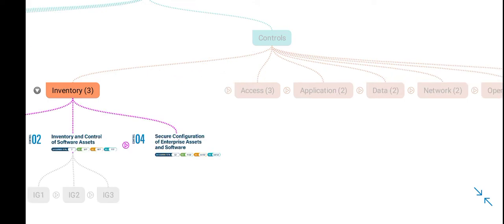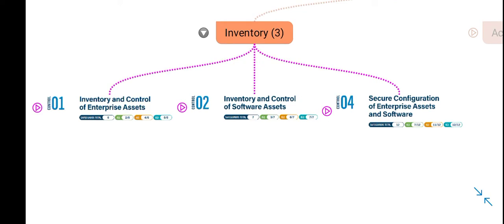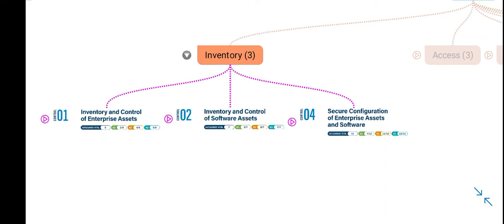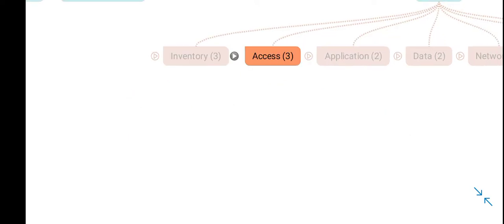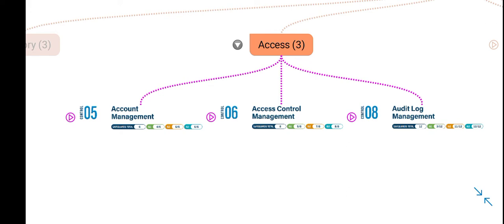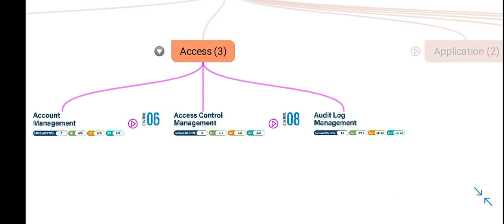With regards to inventory, there are 3 controls. The first control is inventory and control of enterprise assets, the second is inventory and control of software assets, and the third is secure configurations of these assets and software. I thought these could be classified under inventory control. And then in access control, there are 3 controls — account management, access control management, and audit log management.